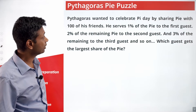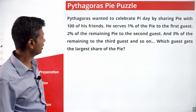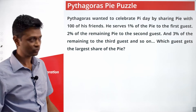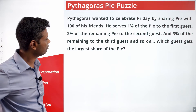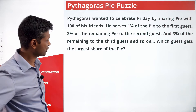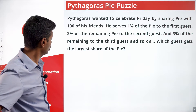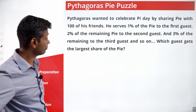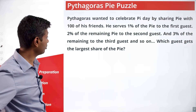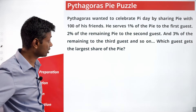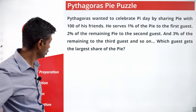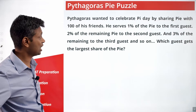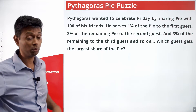Mythogonist wanted to celebrate Pi day by sharing Pi with 100 of his friends. He serves 1% of the Pi to the 1st guest, 2% of the remaining Pi to the 2nd guest, 3% of the remaining Pi to the 3rd guest and so on. Which guest gets the largest share of the Pi?